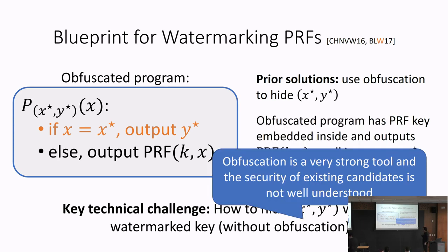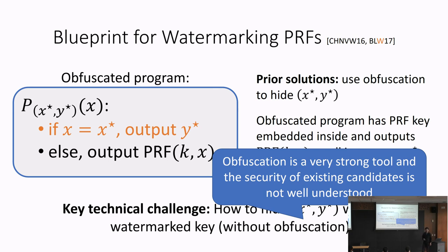The reason we care about building watermarking without obfuscation is that obfuscation is a very strong tool in cryptography — it suffices for building almost all cryptographic primitives — but its security properties are not well understood and it's not a standard cryptographic assumption. A lot of recent work has been looking at developing standard model techniques using well-established assumptions such as lattice-based or pairing-based assumptions to instantiate primitives we know how to build from obfuscation.